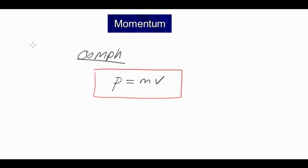So in the formula, P equals M times V. P is momentum. We've got M, which is mass, and V, which is velocity.